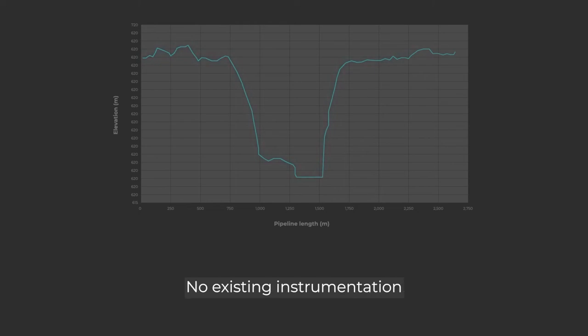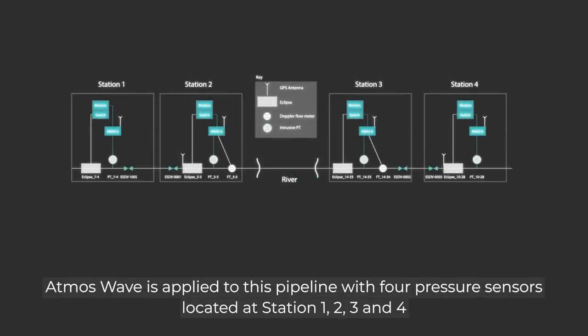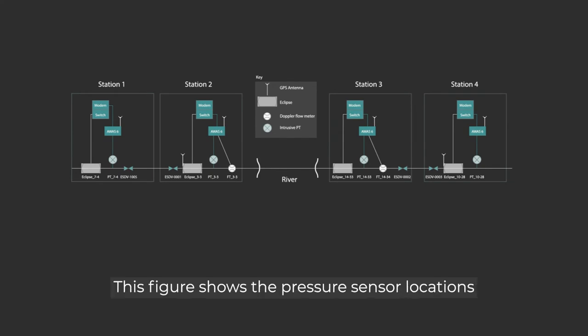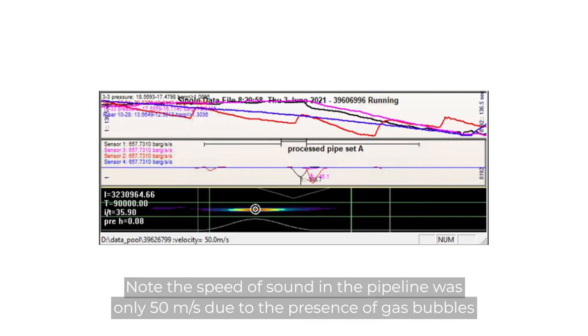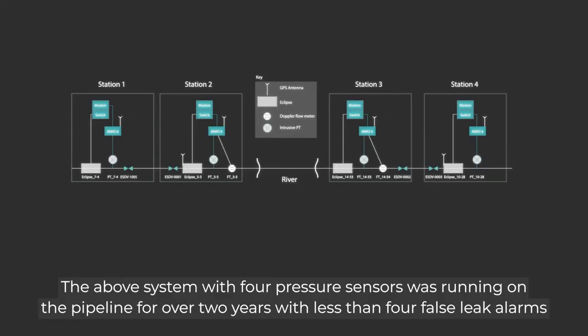Atmos Wave is applied to this pipeline with four pressure sensors located at stations 1, 2, 3, and 4. This figure shows the pressure sensor locations. This figure shows an example of one of the leaks being detected and located. Note the speed of sound in the pipeline was only 50 meters per second due to the presence of gas bubbles.